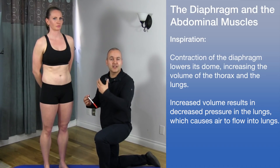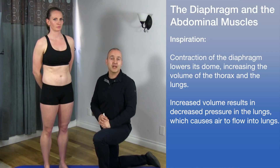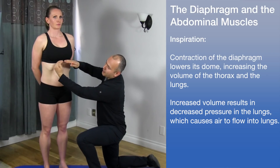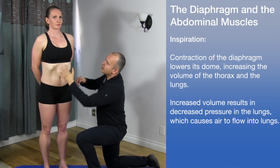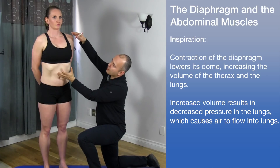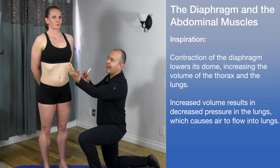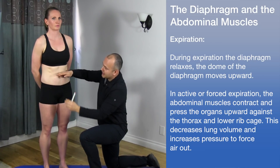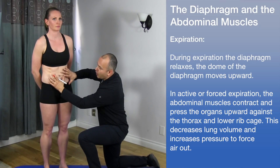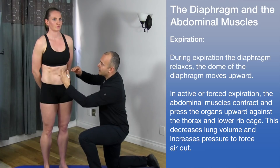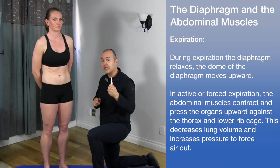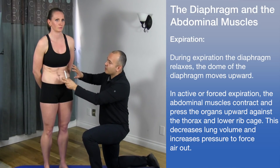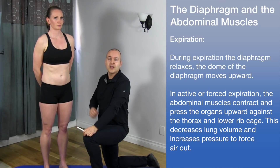The diaphragm and abdominal muscles are involved in breathing. During inspiration, the diaphragm contracts and its dome pulls down, creating negative pressure and more space in the thorax, allowing air to flow in. During expiration, the diaphragm rises and relaxes while all the abdominal muscles contract and squeeze the internal organs to force air out. During forced expiration, there will always be some air remaining in the lungs, known as residual volume.